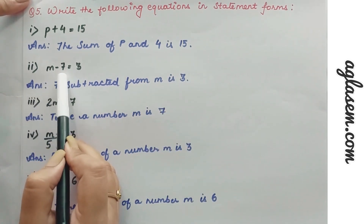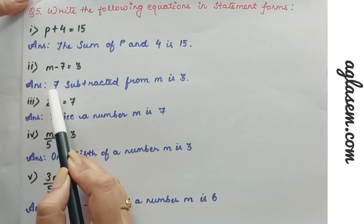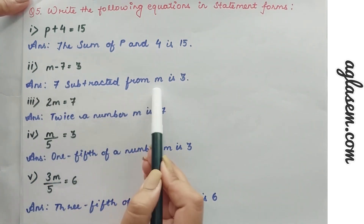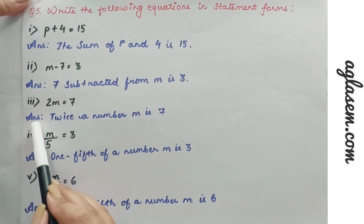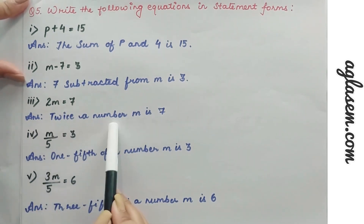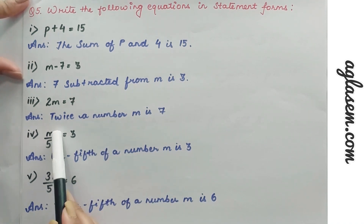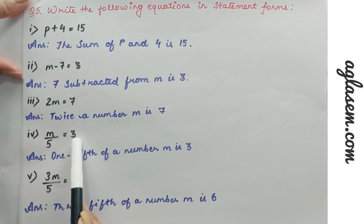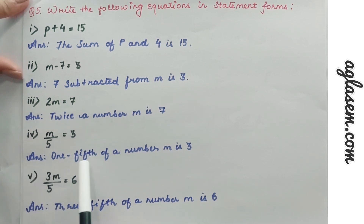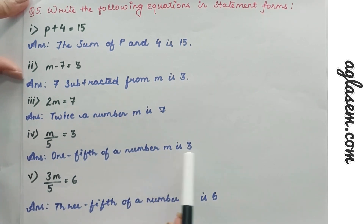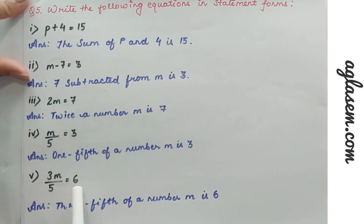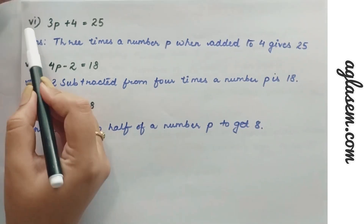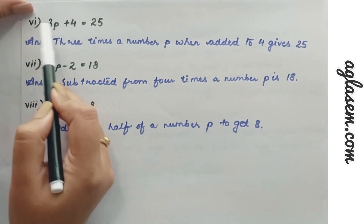Second: m − 7 = 3, the statement is: 7 subtracted from m is 3. Third: 2m = 7, the statement is: twice a number m is 7. Fourth: m/5 = 3, the statement is: one fifth of a number m is 3. Fifth: 3m/5 = 6, the statement is: three fifths of a number m is 6.